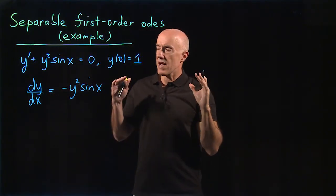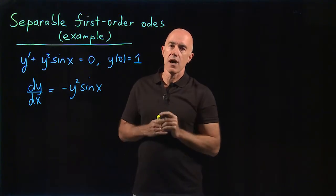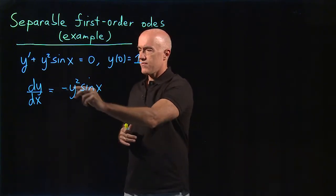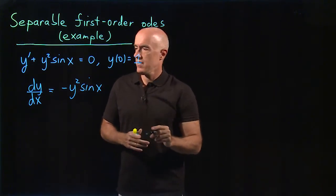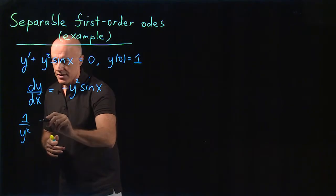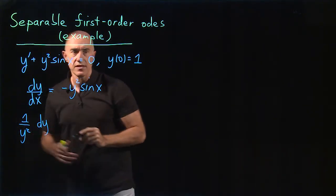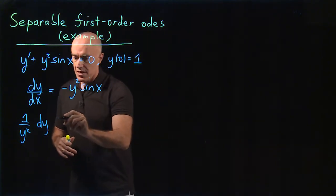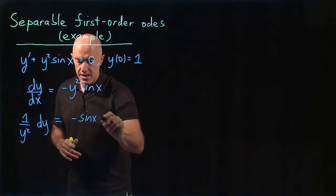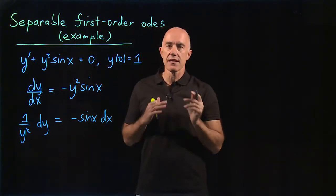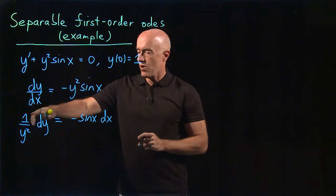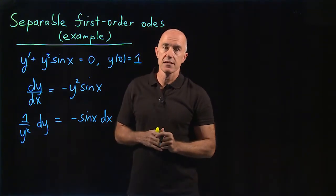I want to write this as some function of y times dy equals some function of x times dx. We can do that if we divide through by y². So we write this as (1/y²)dy, treating dy/dx like a fraction, and that equals -sin(x)dx. We've gotten this equation now in its separated form: a function of y times dy equals a function of x times dx.